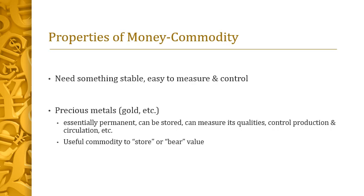What can serve as a money commodity? We need something stable — something physically stable that won't degrade, cannot be easily adulterated or destroyed, and can be measured and controlled. This is why you couldn't use leaves as a money commodity: they're not very stable, easily destroyed, produced constantly, and hard to control. Something like leaves would be pointless.